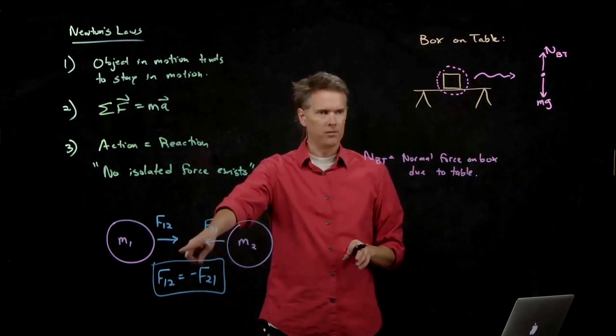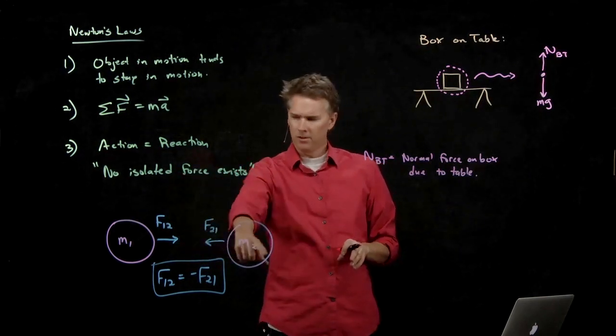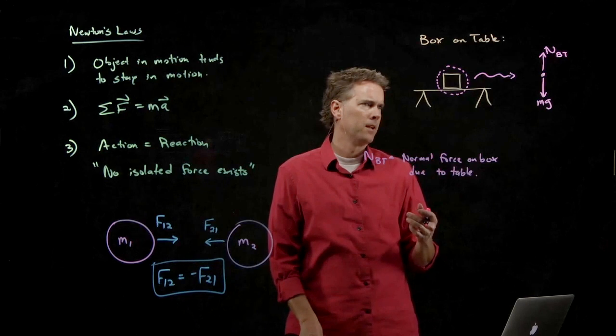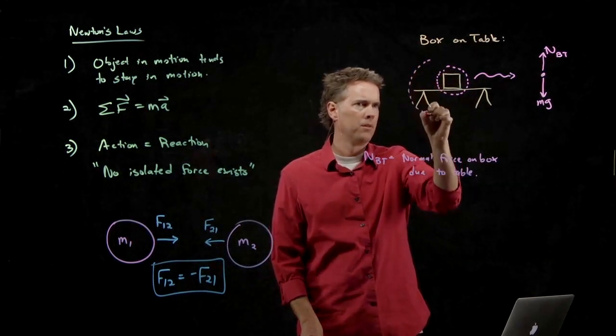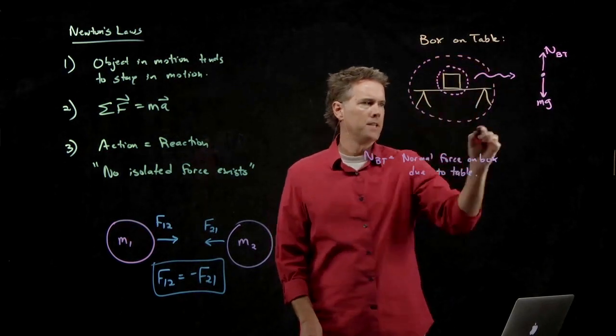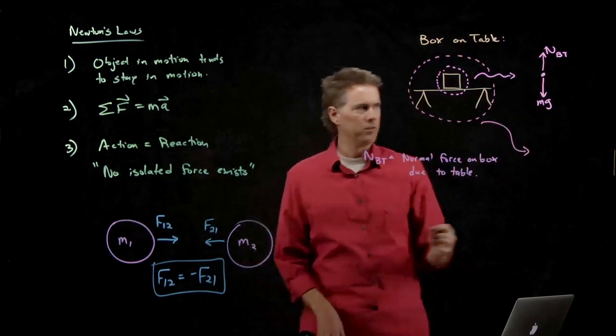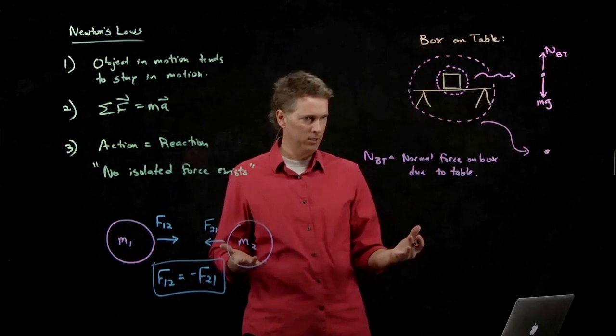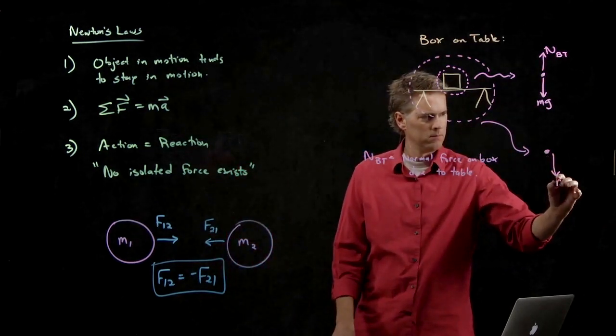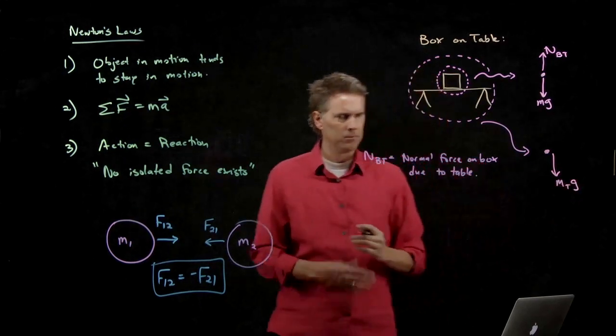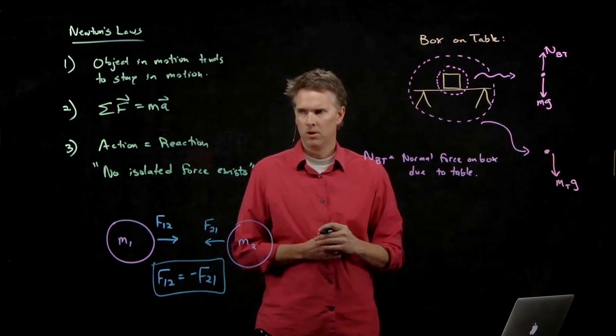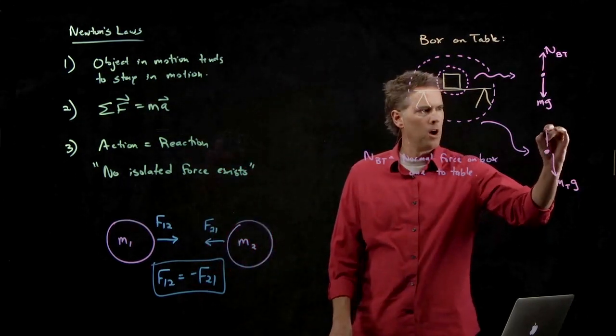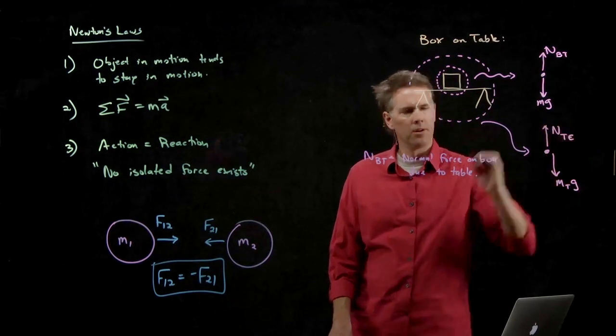But we don't have anything that looks like this yet. If no isolated force exists, we gotta have something else here to go with it. What else do we have? Let's think about the table. If the table is our object of interest, we can write the forces that are acting on the table, and the forces that are acting on the table are gravity, mass of the table times gravity.